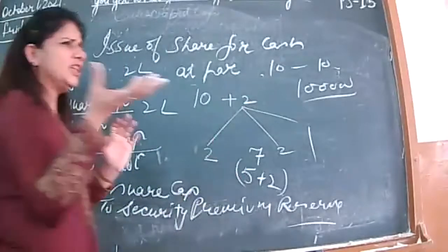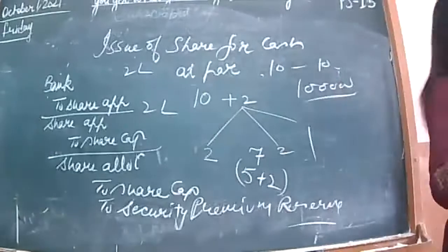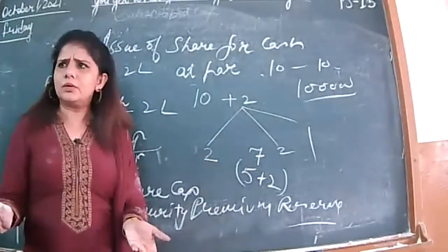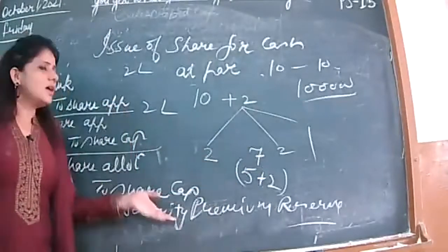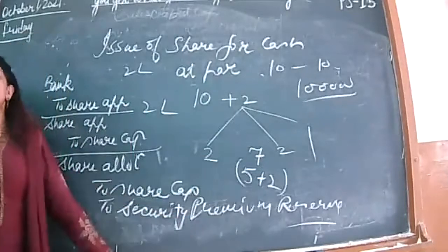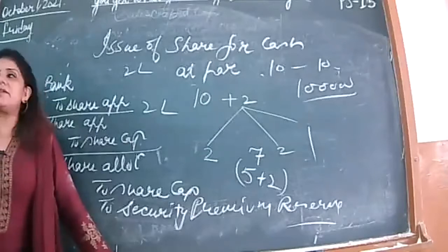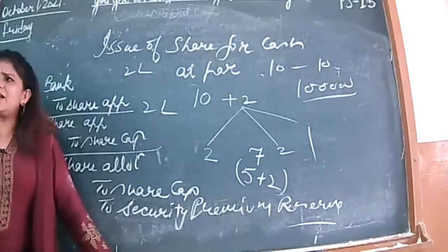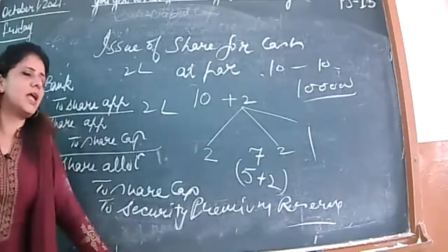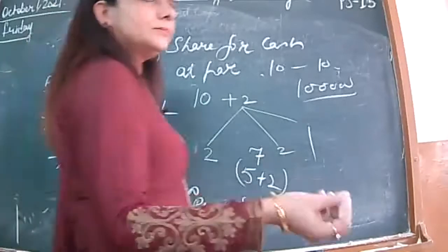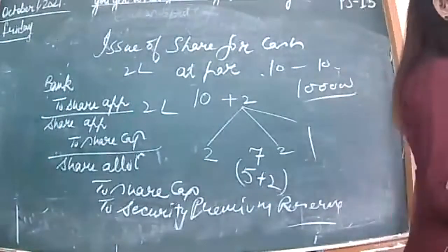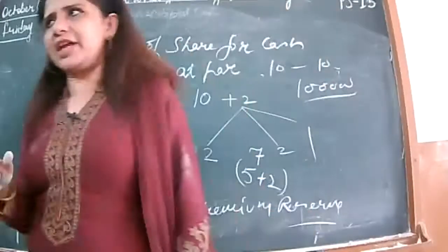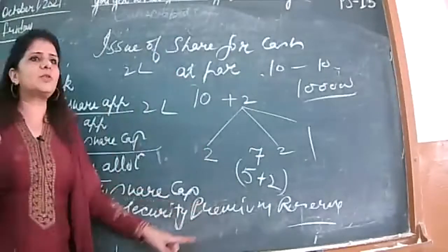It is one kind of gain, but of a non-recurring nature — sometimes the company sells shares at premium. That's why we call it a reserve. All reserves are always credited when we create them. Reserve and provision are always credited. That's why security premium reserve is credited in the journal entry — being a benefit of non-recurring nature. Any doubt? On allotment: 1 lakh shares multiplied by 7 rupees is 7 lakh. Nominal value to share capital is 5 lakh, and security premium reserve is 2 lakh.